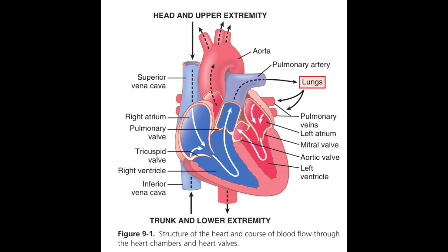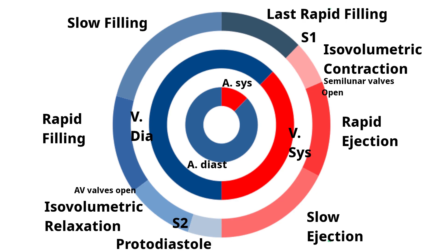When we say systole and diastole of the heart, we mean systole and diastole of the ventricles. Although the atria also undergo systole and diastole, simply saying systole means systole of the ventricles. The cardiac cycle is the performance of the human heart from the ending of one heartbeat to the beginning of the next. The cardiac cycle duration comes out to be 0.8 seconds if we take the heartbeat as 75 beats per minute.